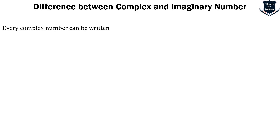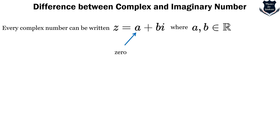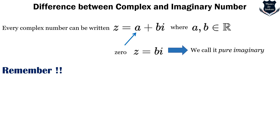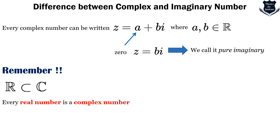Every complex number can be written as z = a+bi, where a and b are real numbers. If we set a equal to 0, then z equals bi, which we call purely imaginary. One important point to remember is that because real numbers belong to the family of complex numbers, every real number is actually a complex number, but every complex number is not necessarily a real number.